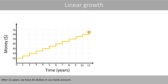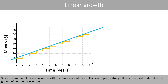After 11 years, we have $65 in our bank account. Since the money increases with the same amount — $5 every year — a straight line can be used to describe the growth of our money over time.